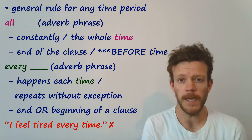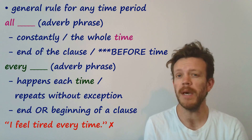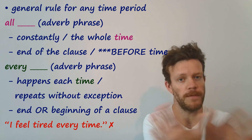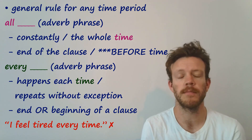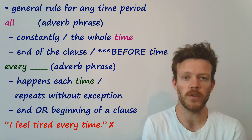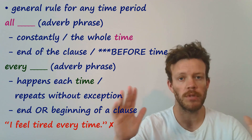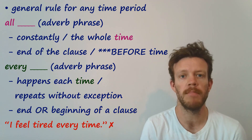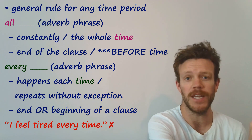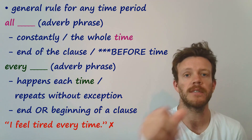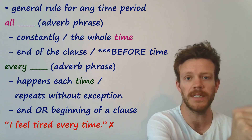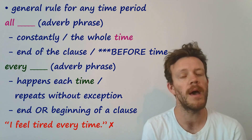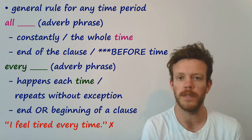That's basically it for today. It may seem like a simple one, but there's lots of confusion with this. So always remember: 'all' means constantly, the whole time. 'Every' means each — this time, this time, this time — without exception. If you remember that, you're going to avoid this mistake. I'll see you for another video in the next couple of days.